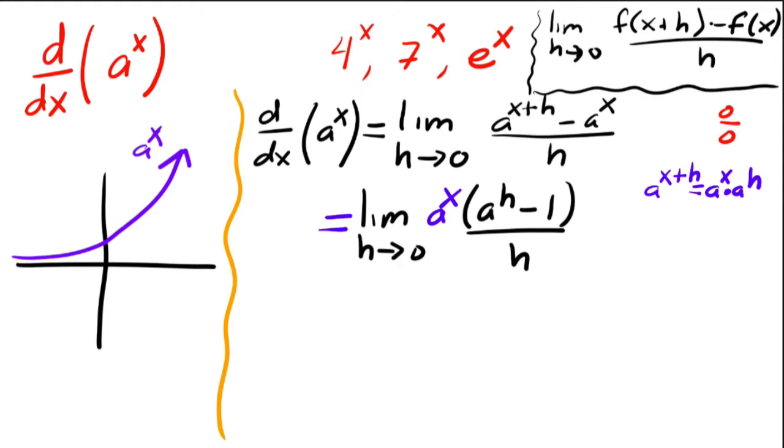Now, notice also that a to the x doesn't depend on h at all. And so you can take that a to the x outside of the limit. Now, if this guy had an h in it, then you wouldn't be able to. But because you're taking the limit as h goes to zero, this guy can be taken out. So then you would have a to the x times the limit as h approaches zero of a to the h minus one all over h.